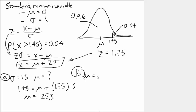And in this case, we want to know a standard deviation. Given the same probability, we know that x greater than 148 is equal to 0.04. So, the z value remains the same. It's 1.75.